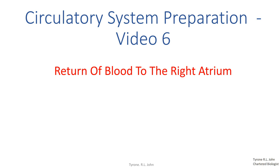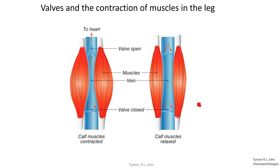There are a couple of mechanisms that can aid the return of blood to the heart from the lower part of the body, and that's what this short video is about. The first one involves valves and the contraction of muscles in the leg — specifically the calf muscles. This is often referred to as the skeletal muscle pump, and it can only work when we take into account the valves present within the veins.